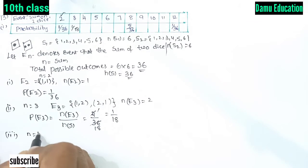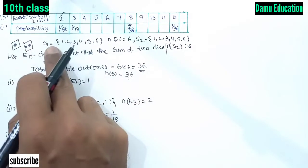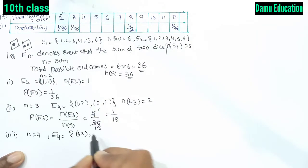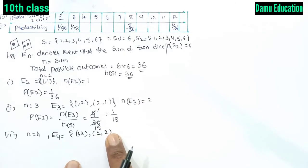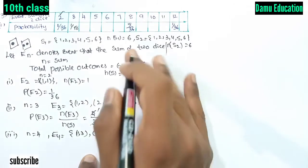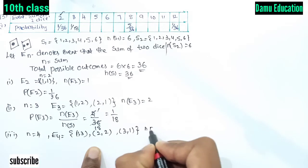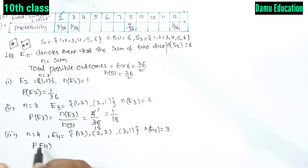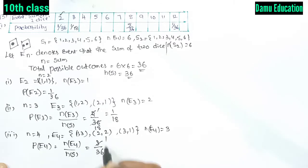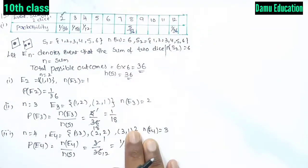For E4, the sum equals 4. The favorable outcomes are (1,3), (2,2), and (3,1). So n(E4) = 3, and P(E4) = 3/36 = 1/12.